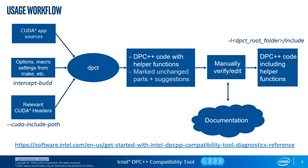This is the usual DPC++ Compatibility Tool usage workflow. As input to the tool, you need to pass the sources of the CUDA application — options, macro definitions, etc. — which can be gathered via a special tool called intercept-build. In a simple case, we don't need to collect settings from a makefile and may skip it. You also need to provide relevant CUDA header files, which can be done via an additional tool option.